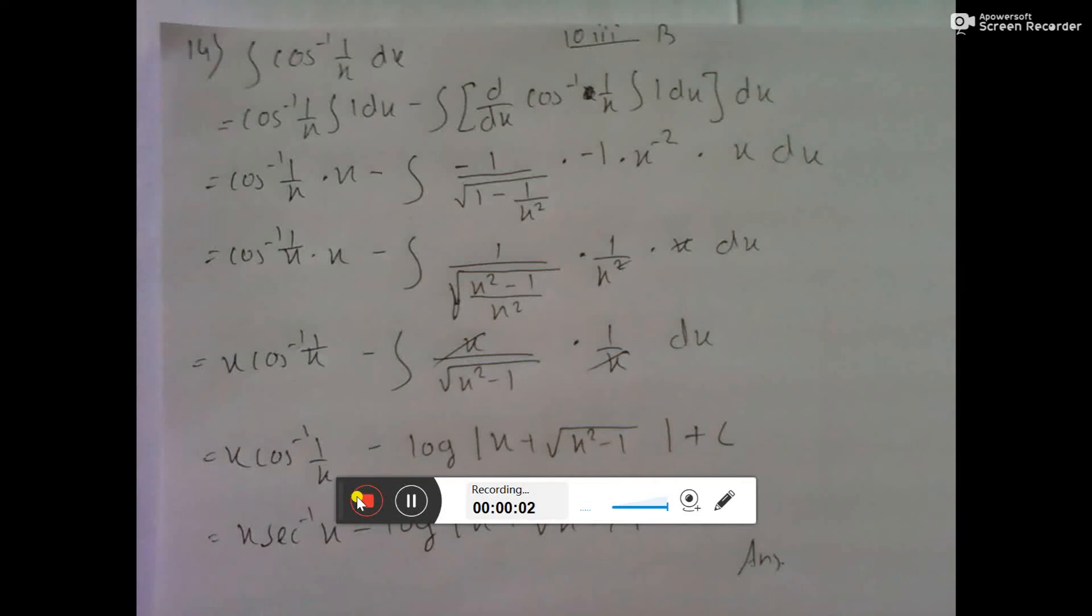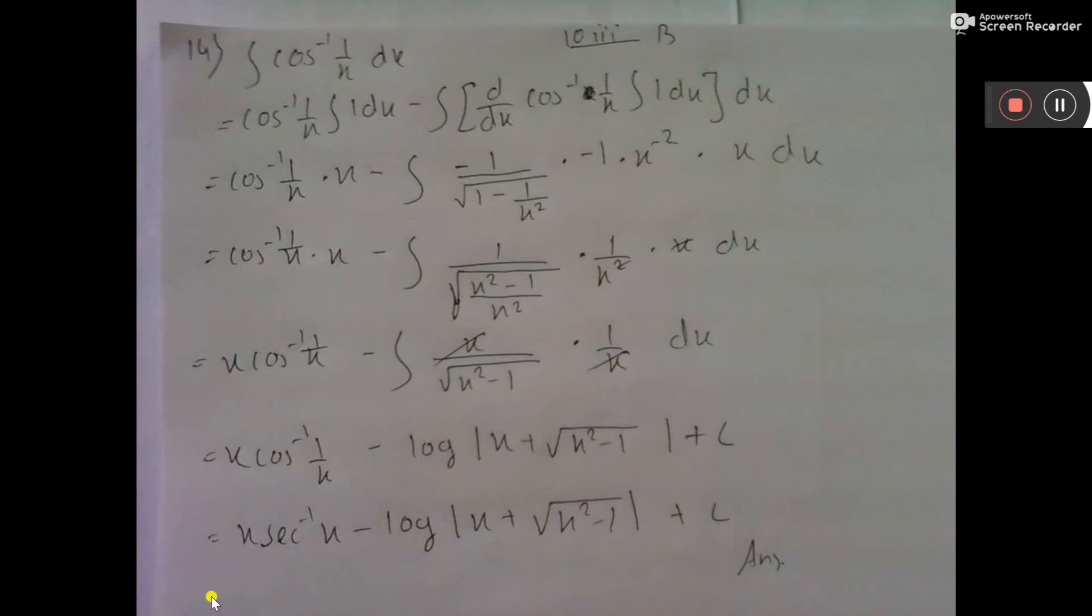It is cos inverse 1 by x dx. So, we can do here cos inverse 1 by x into 1. Then u into v.